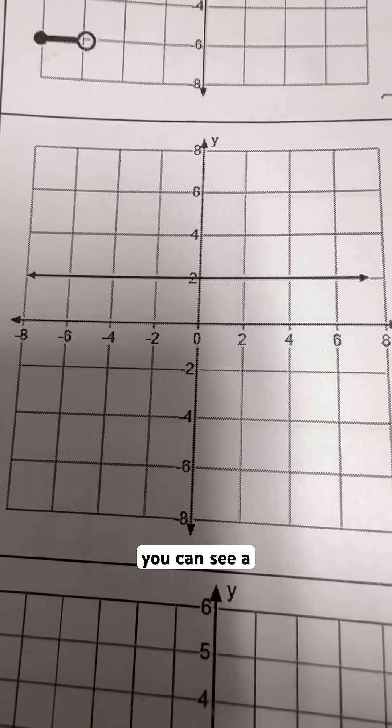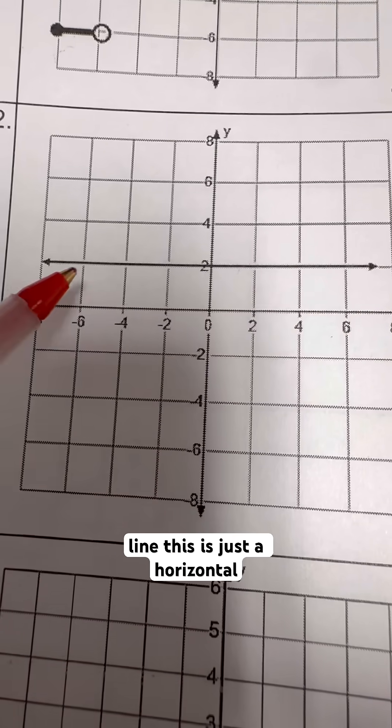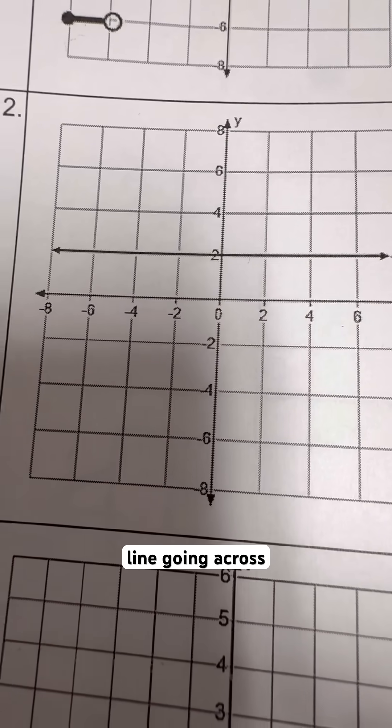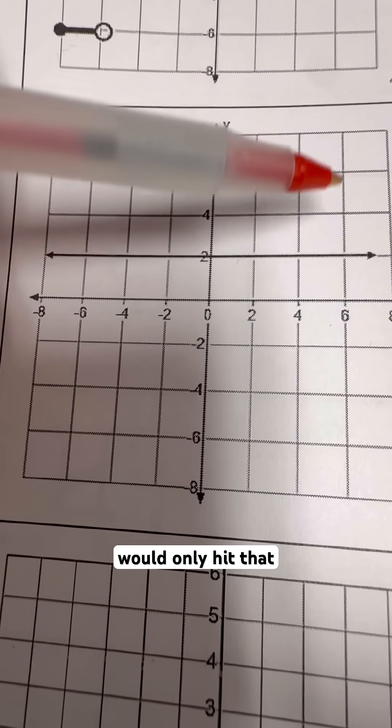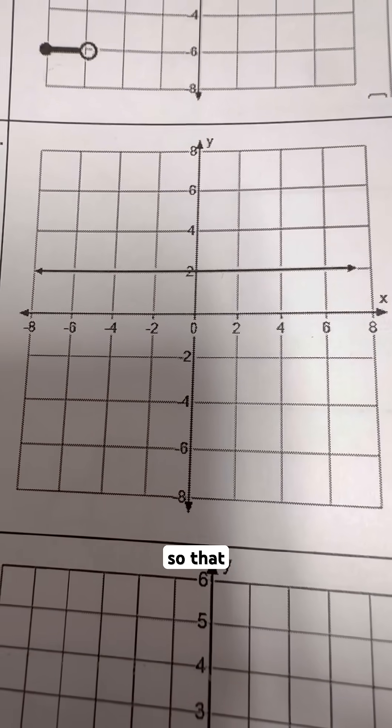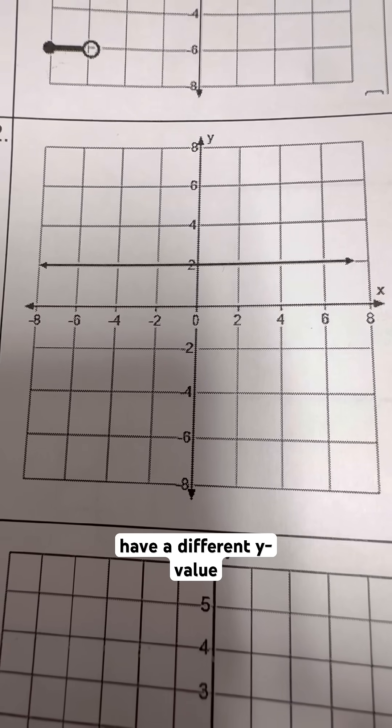Now, when we're looking at this one, you can see a no slope line. This is just a horizontal line going across. If I was to visually go ahead and draw a vertical line anywhere through it, it would only hit that line one time. So that makes every x value have a different y value.